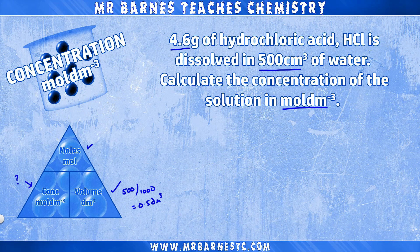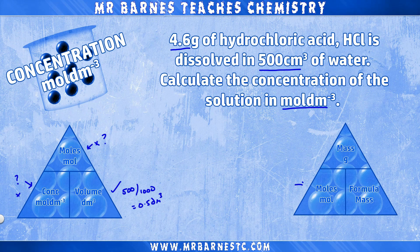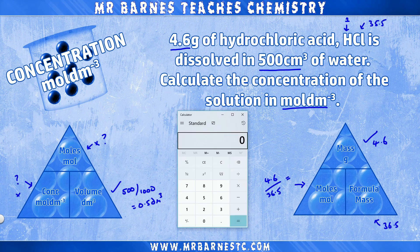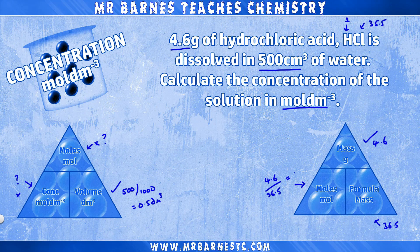However, we haven't been given the moles in the question — so how can we work that out? This is where the other triangle comes in. We have the mass, which is 4.6 grams, and we can work out the formula mass by adding the atomic masses together: hydrogen is 1, chlorine is 35.5, giving a formula mass for hydrochloric acid of 36.5. Therefore moles = mass 4.6 divided by formula mass 36.5, giving 0.126 moles.